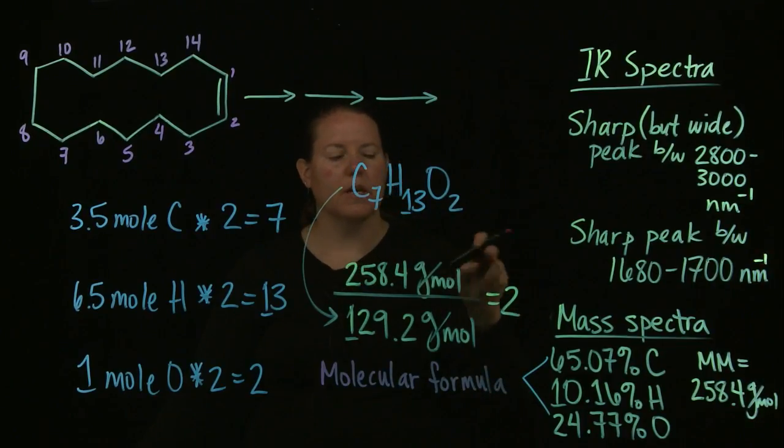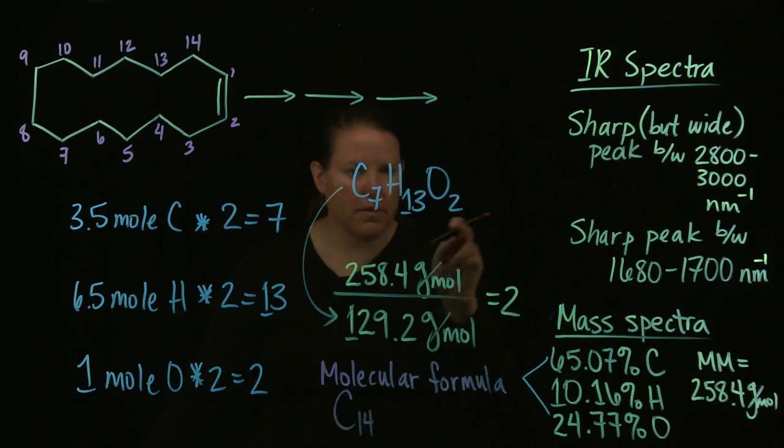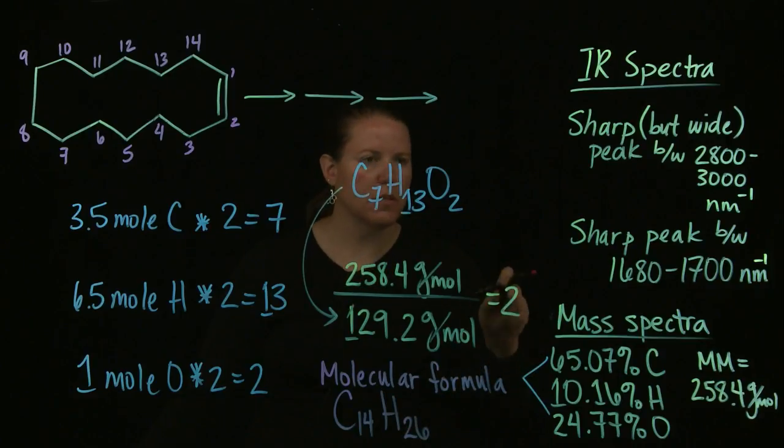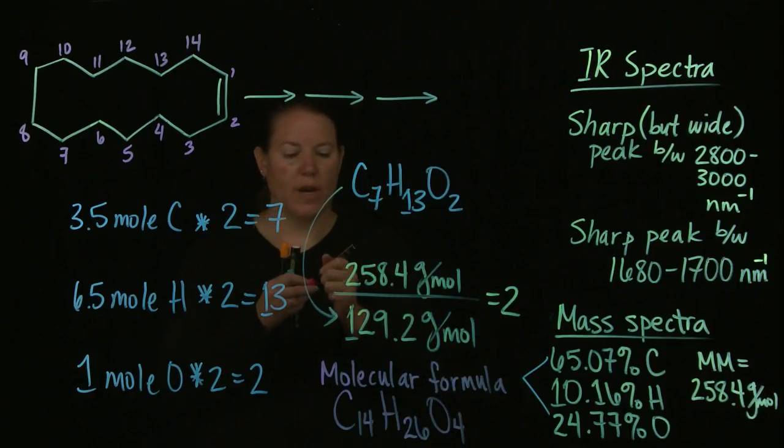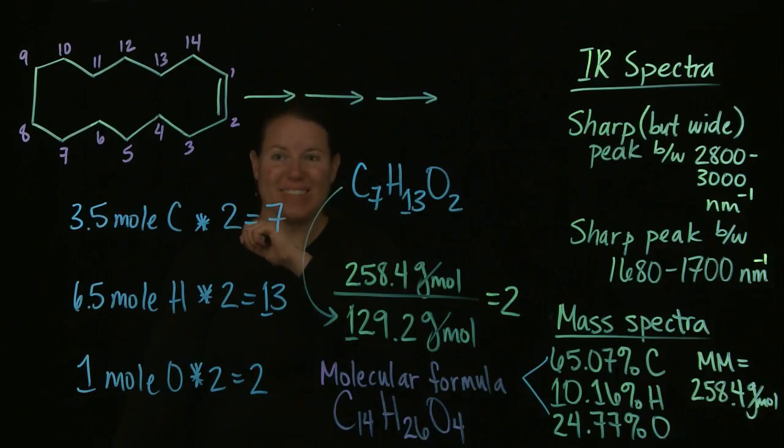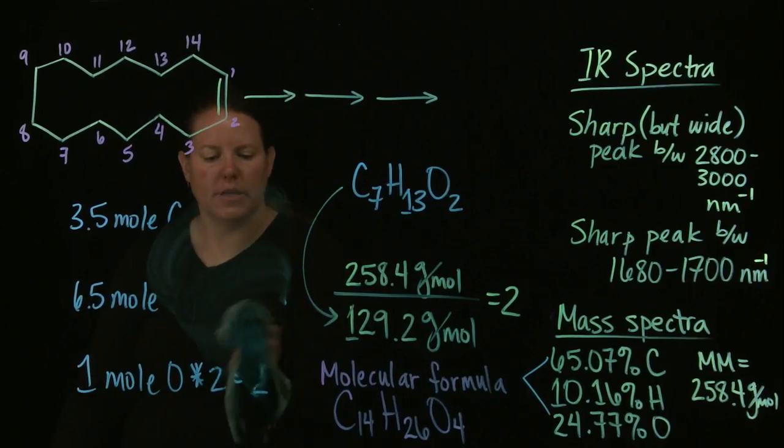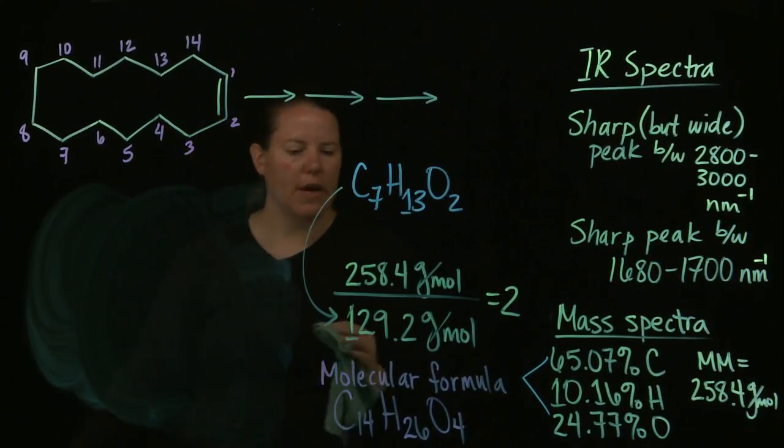The molecular formula, this is giving me the number of C's and H's and O's that I'm going to actually use. The molecular formula in the end is 2 times 7, which is 14. 2 times 13 gives me 26. And 2 times 2 gives me 4. So I have C14H26O4, which actually is a little bit better because that gives me at least the 14.